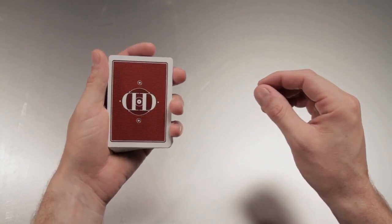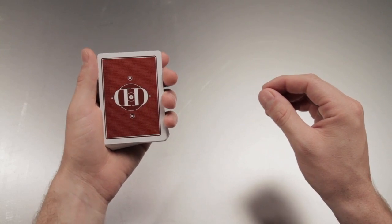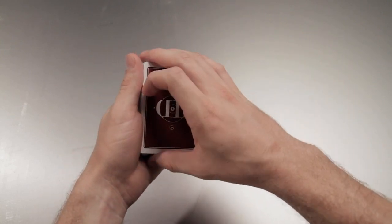When you're ready to begin, transfer the index finger from the outer end to the side of the second finger. This allows the right hand to come over and grip the cards in end grip.